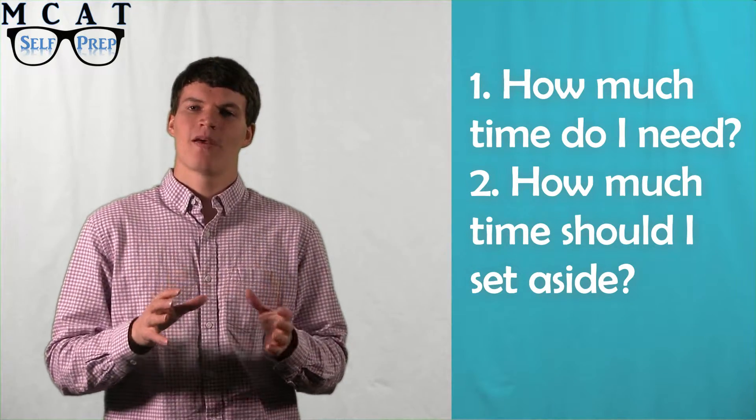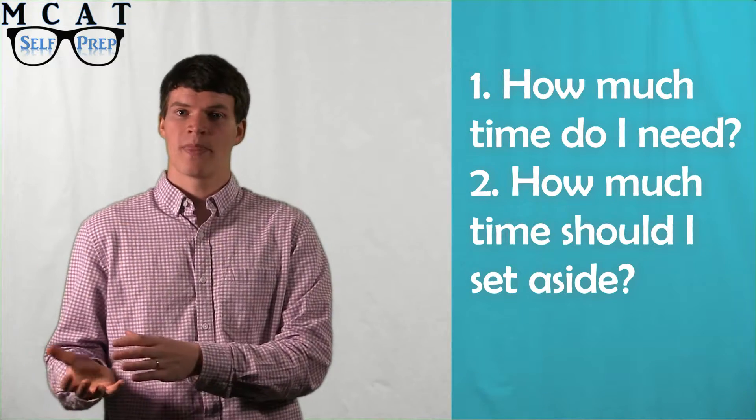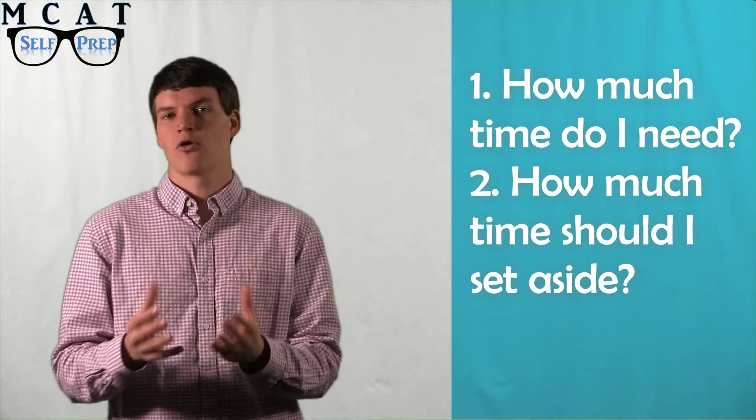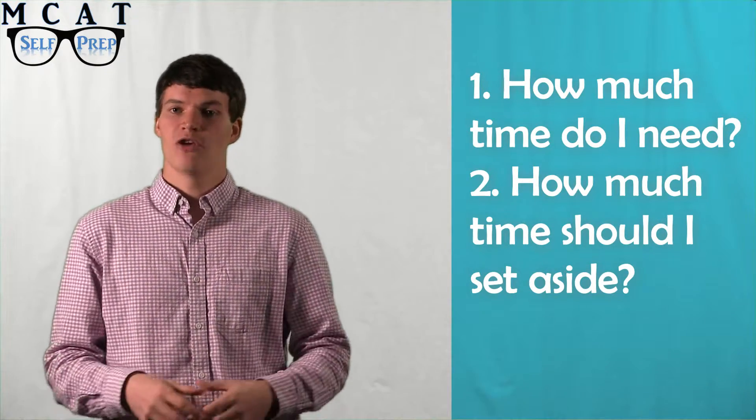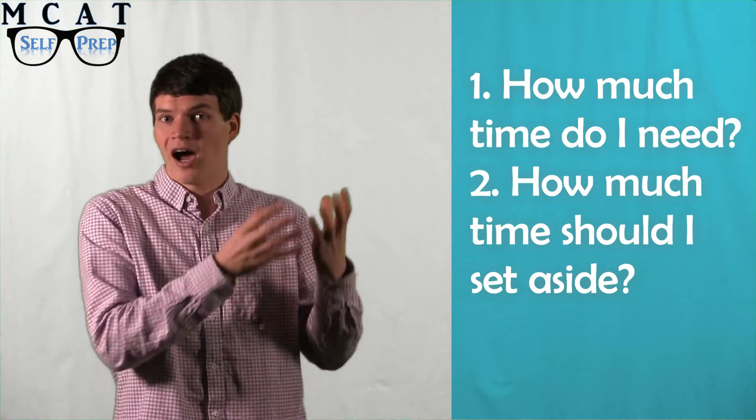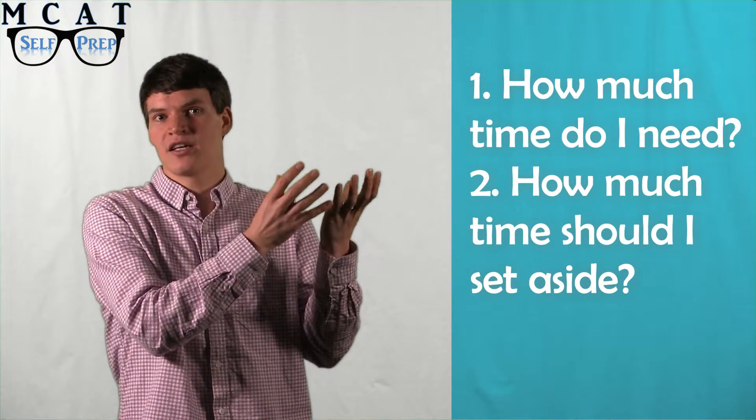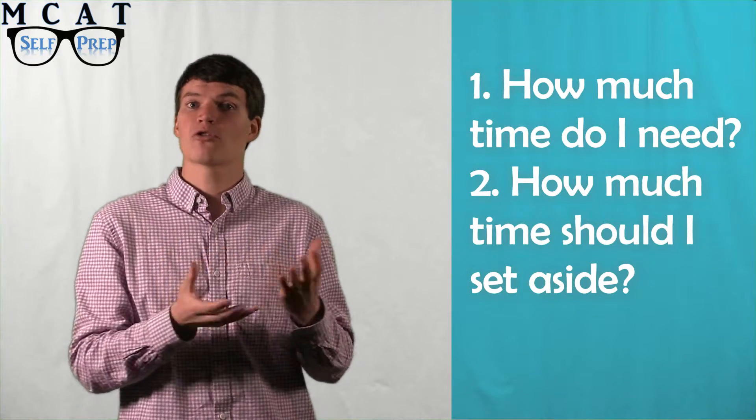If you have a high GPA and/or a low MCAT score, you should set aside an amount of time closer to 200 hours. If you have a low GPA and/or a high MCAT goal, on the other hand, you should set aside an amount of time closer to 1,000 hours.